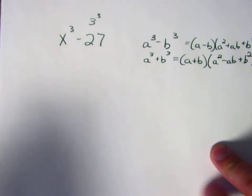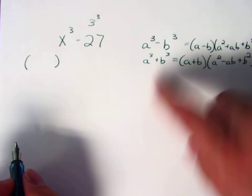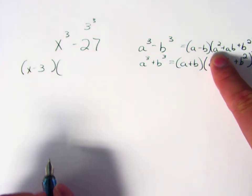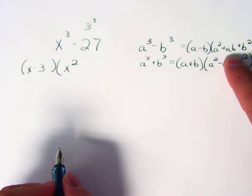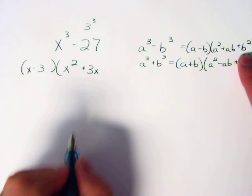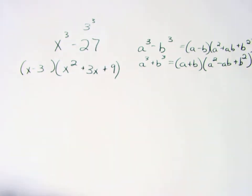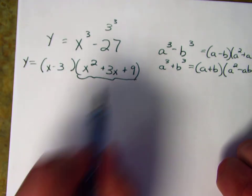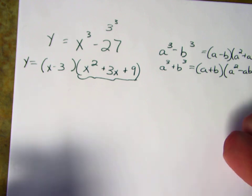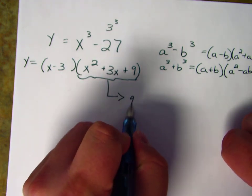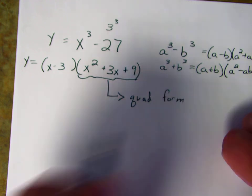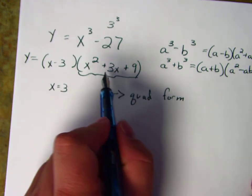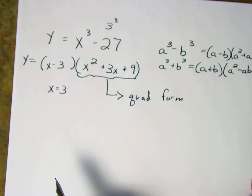For our example, x cubed minus 27: our a is x and since 3 cubed is 27, our b is 3. Applying the formula, we get (x minus 3)(x squared plus 3x plus 9). Note that the second factor never factors further — to find its zeros we'd need the quadratic formula. So we get one zero at x equals 3, and the quadratic formula gives us the remaining zeros from the trinomial part, for a total of three zeros.